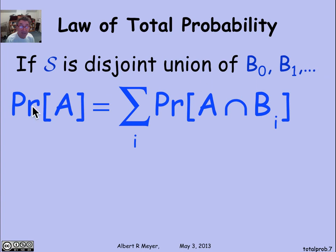Then it's still the case that the probability of A is equal by the sum rule to the probability of these disjoint pieces, the parts of A that are in each of the different blocks of the partition.